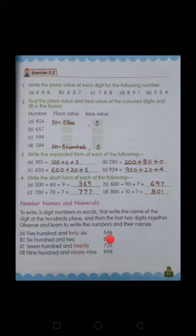Like for example, 5, 4, 6 is written as 546. 6, 0, 2 is written as 602. 7, 2, 0 is written as 720. 9, 9, 9 is written as 999.